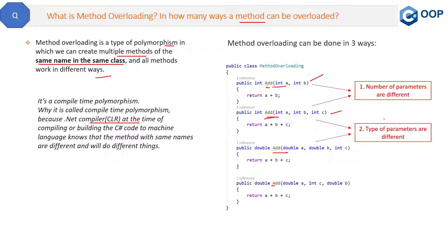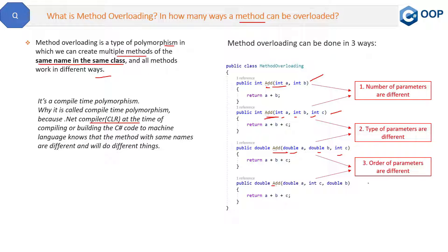The second way is when the type of parameters are different. In the first method we have integer, integer, and integer, and in the third method we have double, double, and integer. So the type of parameters are different — one has integers and the second has doubles. This is the second way of doing overloading.